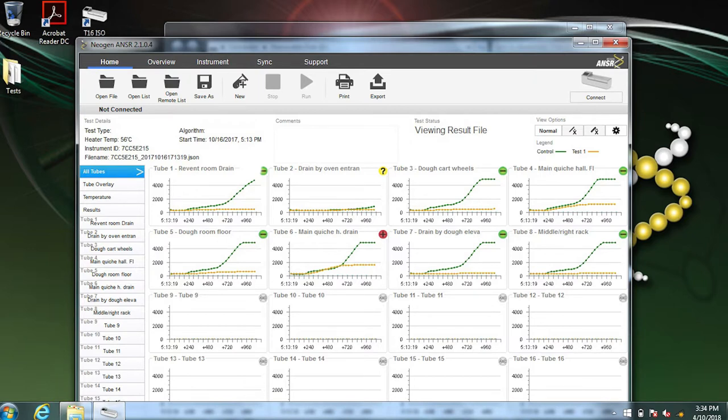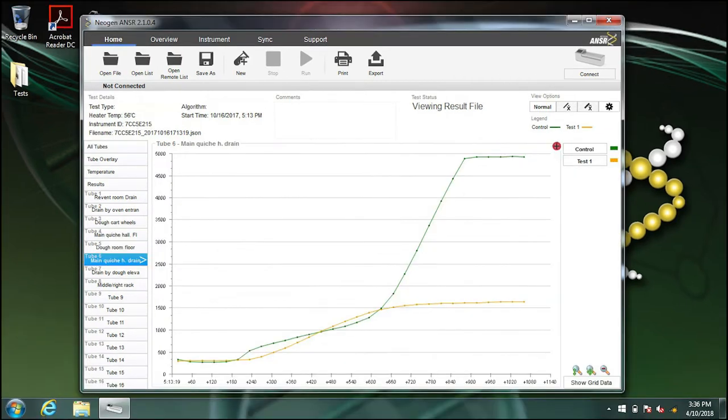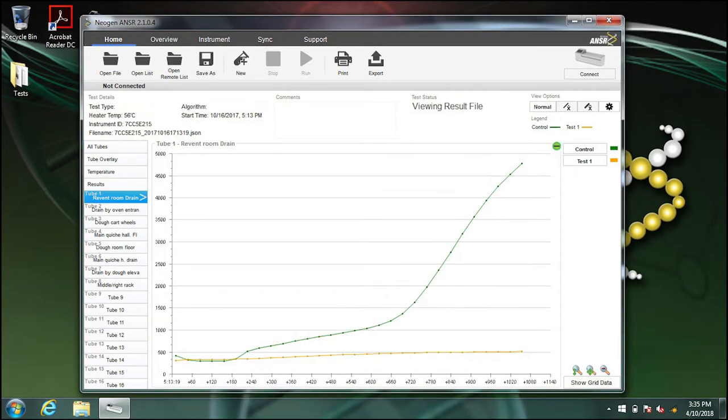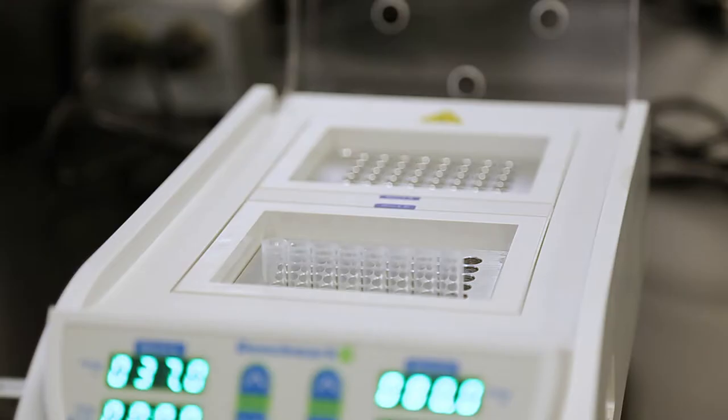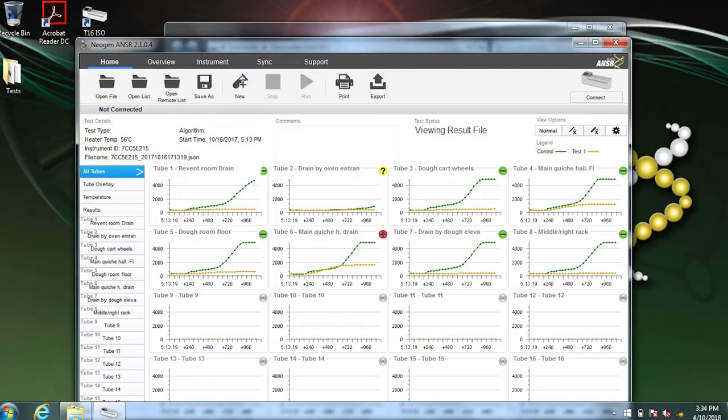Test results. You will see the results appear on the computer screen in real time. When the reading finishes, the results display as a presumptive positive or a negative. You don't need to interpret the results. In the case of an invalid, which appears as a question mark, you must run the test again using the retained samples. The final step is saving the results.